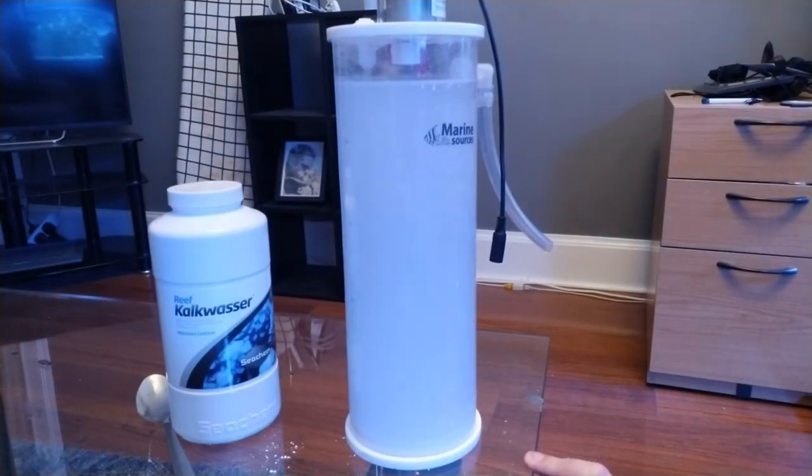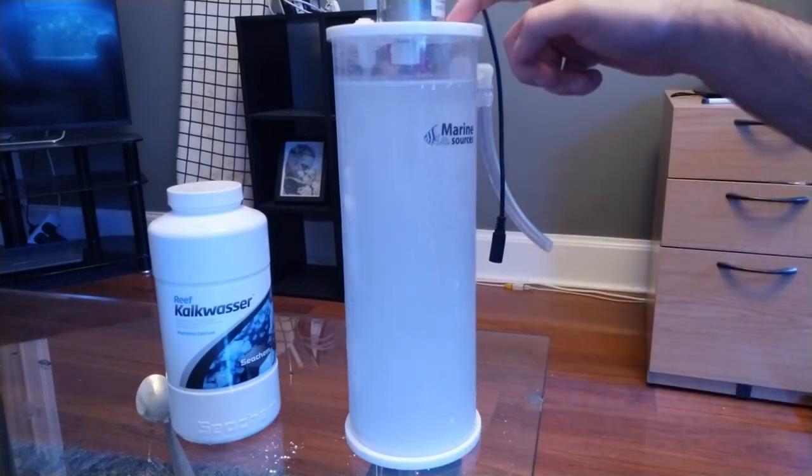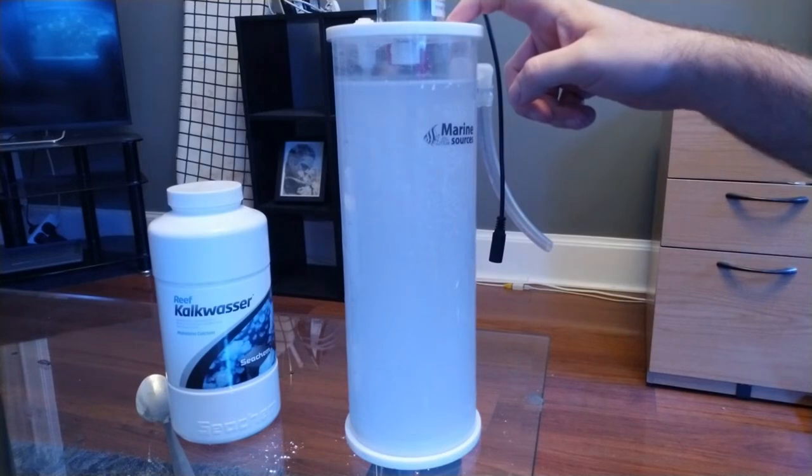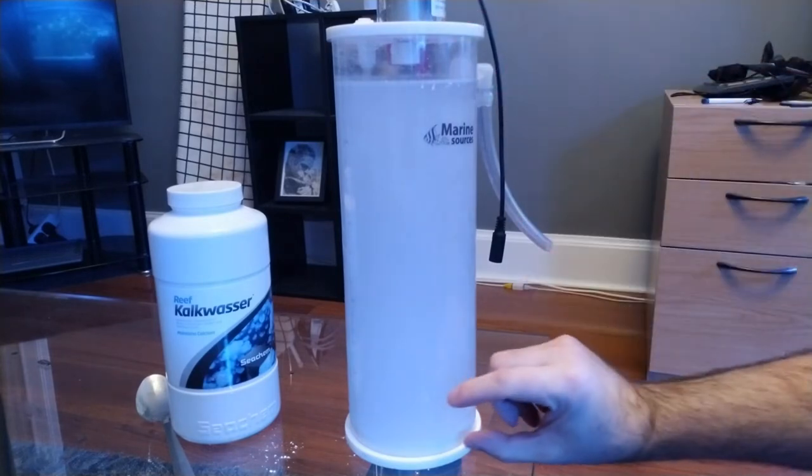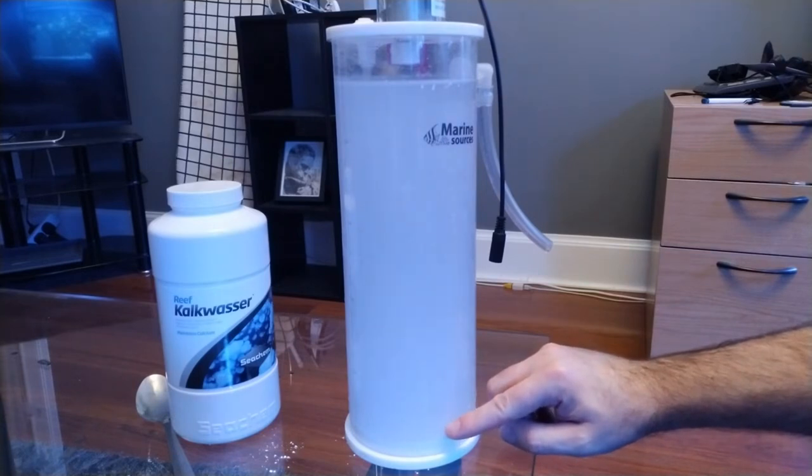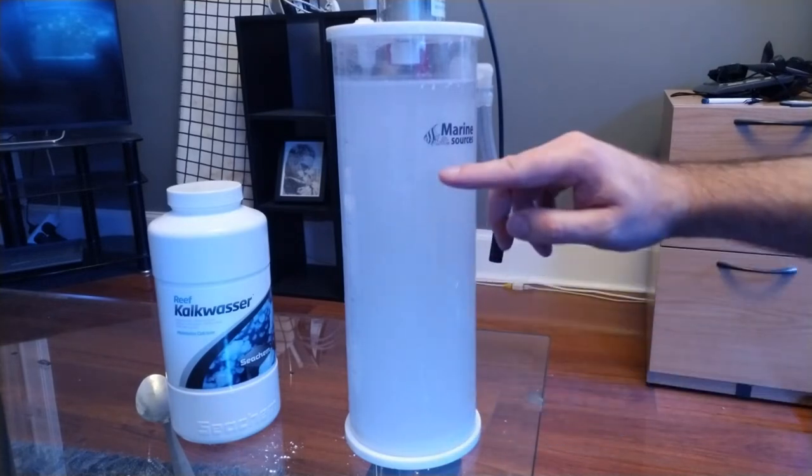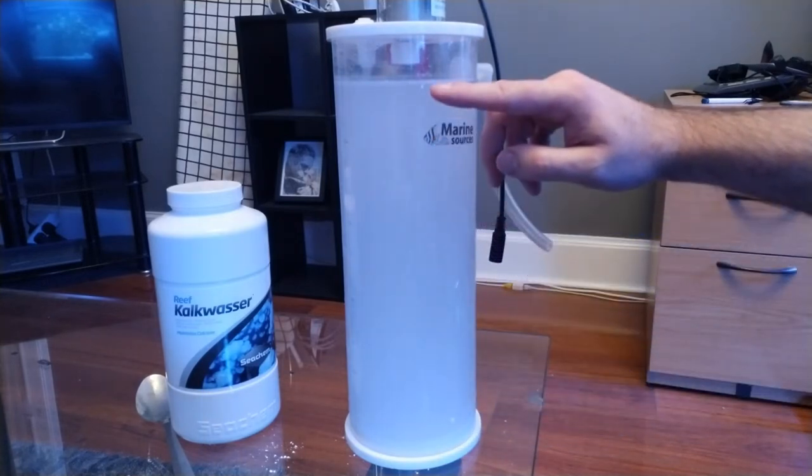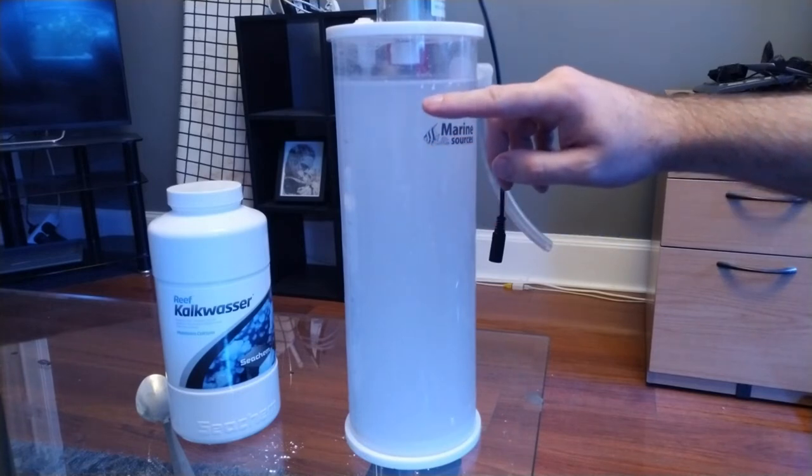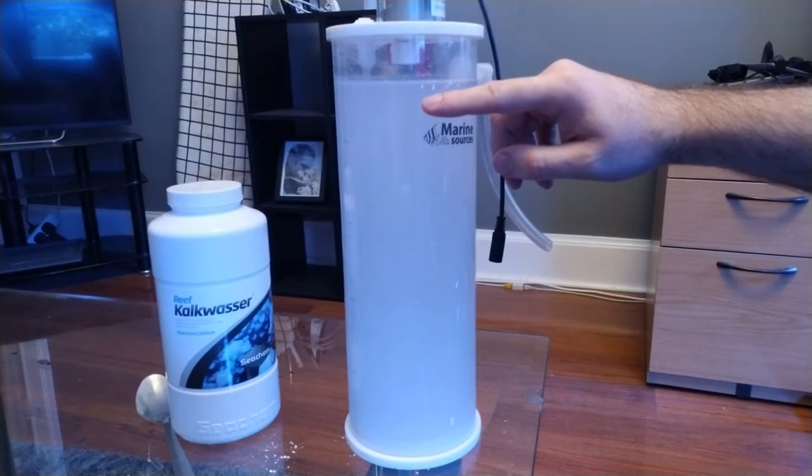Once you've added your Kalkwasser powder to the reactor, what you want to do is leave it to settle out for a few hours so that you have a thick layer of the Kalkwasser powder at the bottom, which is actually called Kalkwasser slurry. What you want to dose to the aquarium is the clear liquid at the top. This is your fully saturated lime water or Kalkwasser.